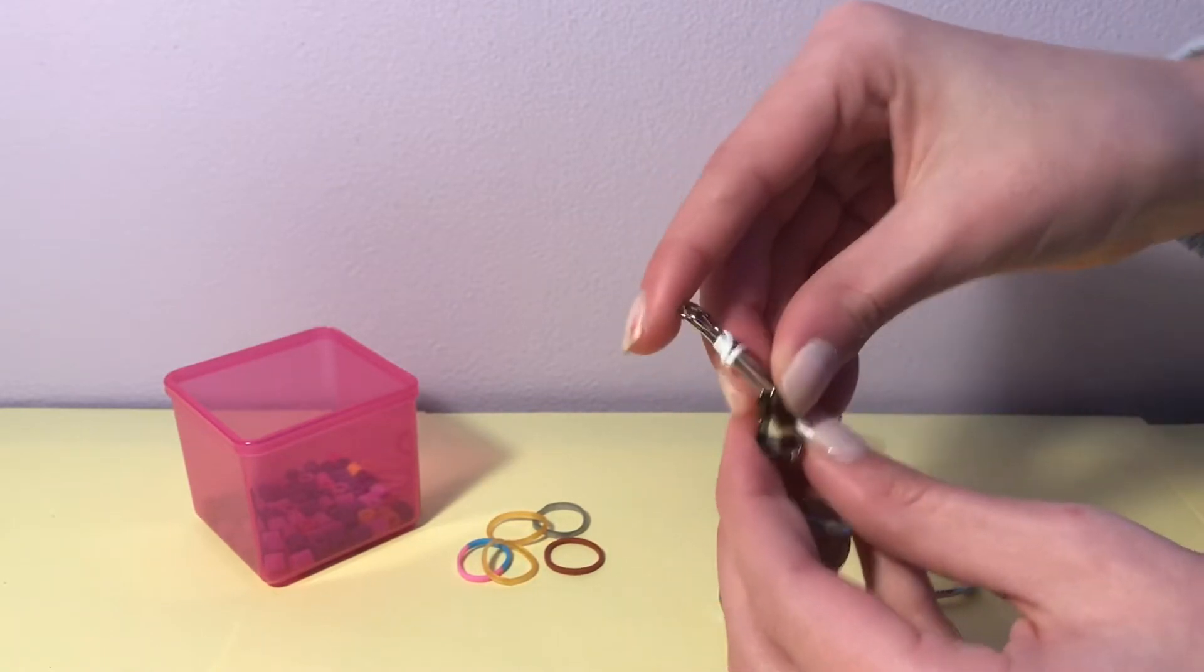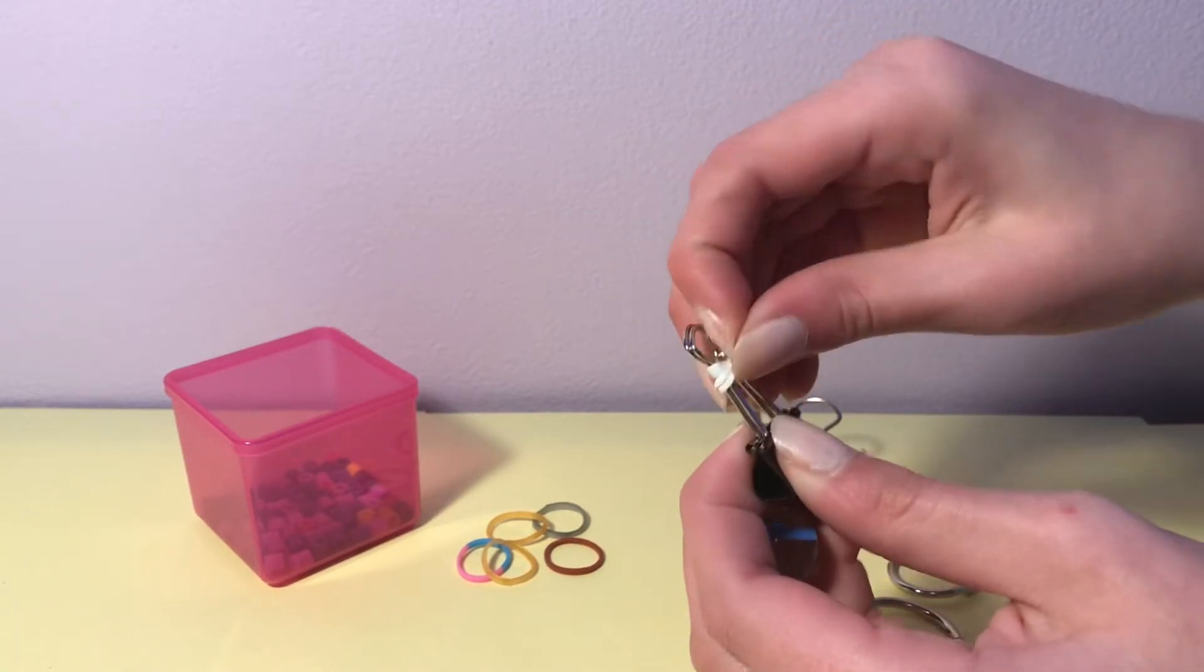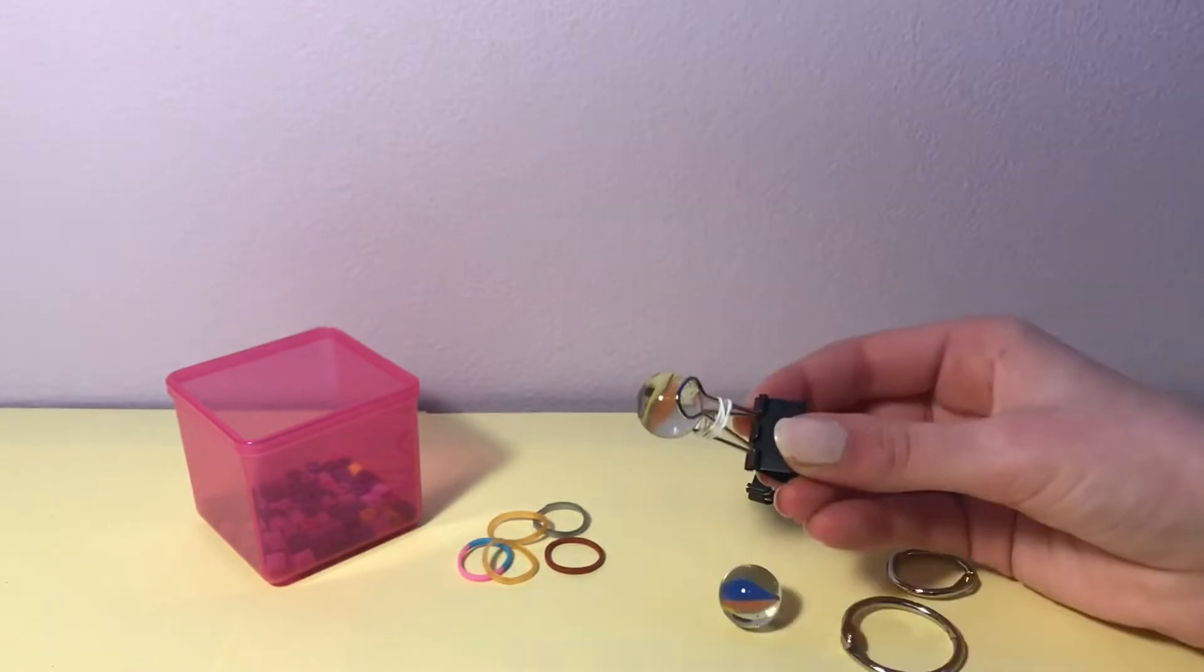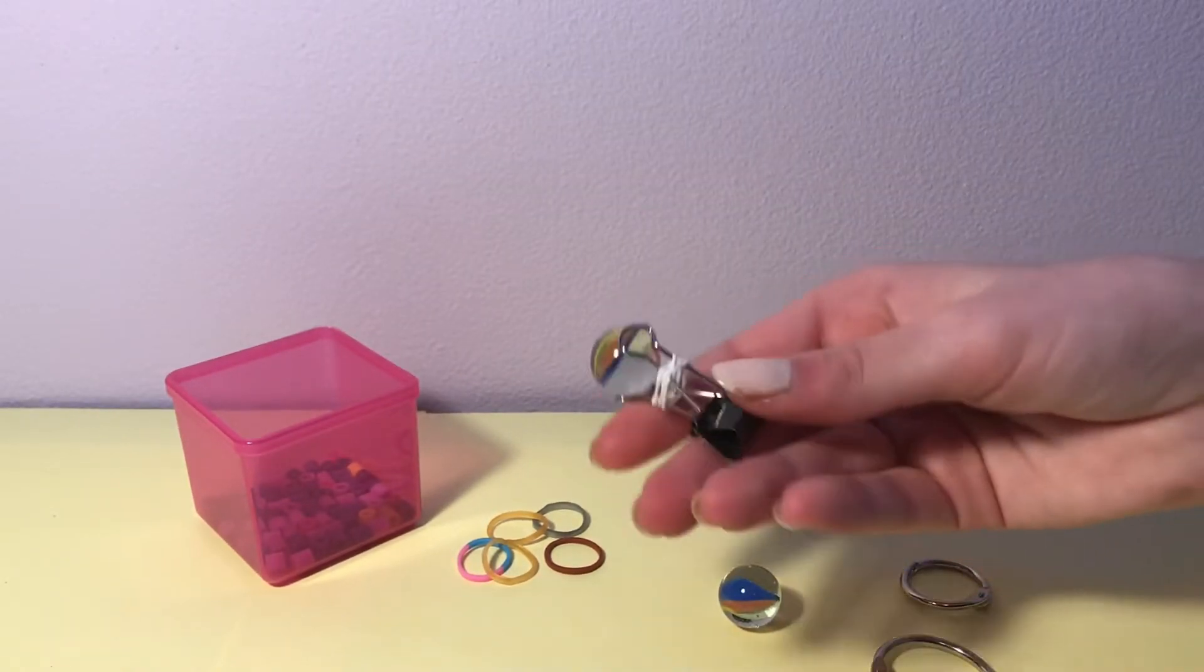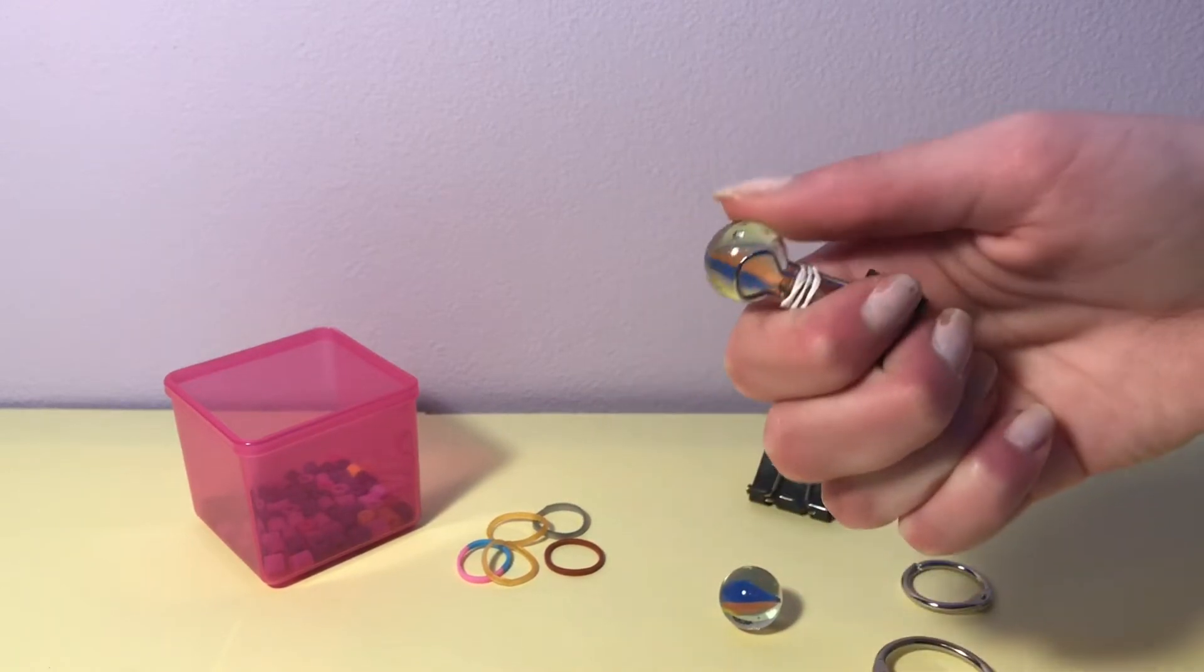This part is pretty tricky, so make sure that your rubber bands aren't too tight. So once you have the rubber band tied around and your marble in place, you're all done. Now it's a little finger roller.